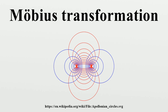Given a set of three distinct points Z1, Z2, Z3 on the Riemann sphere and a second set of distinct points W1, W2, W3, there exists precisely one Möbius transformation f with f(Zi) = Wi for i = 1, 2, 3. There are several ways to determine f from the given sets of points. It is easy to check that the Möbius transformation with a specific matrix maps Z1, Z2, Z3 to 0, 1, ∞ respectively. If one of the Zi is infinity, then the proper formula is obtained by first dividing all entries by Z and then taking the limit as Z → ∞.